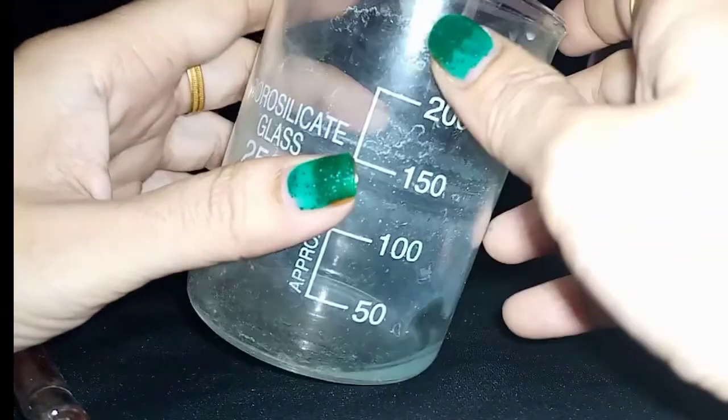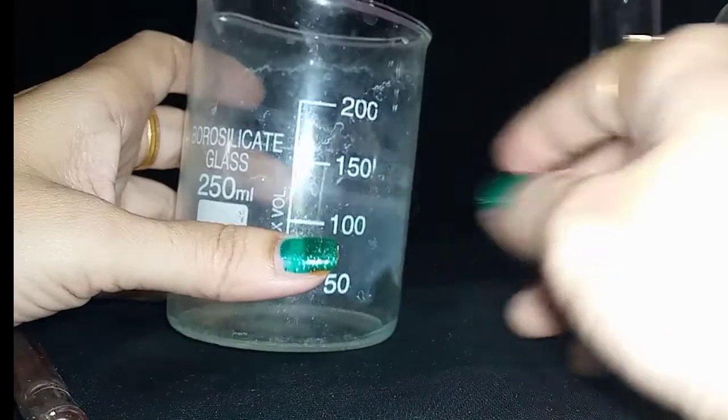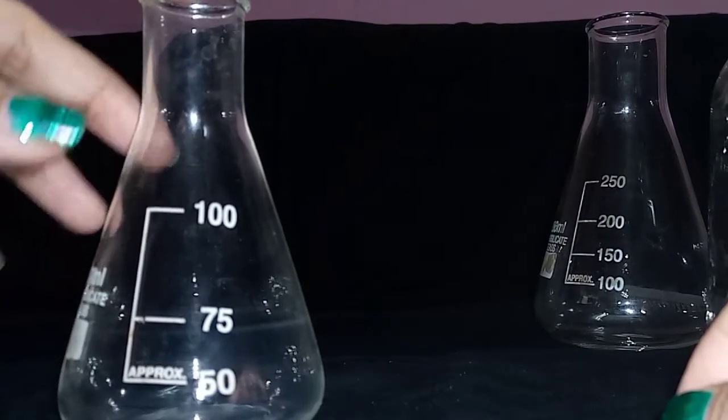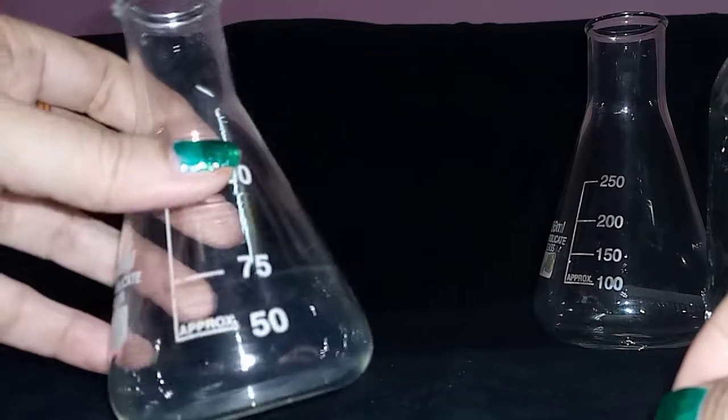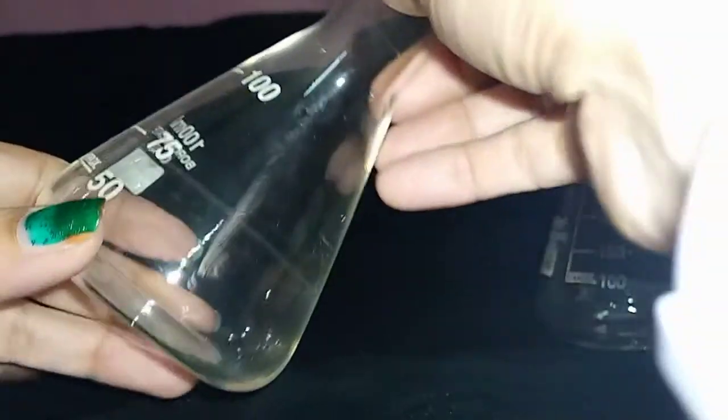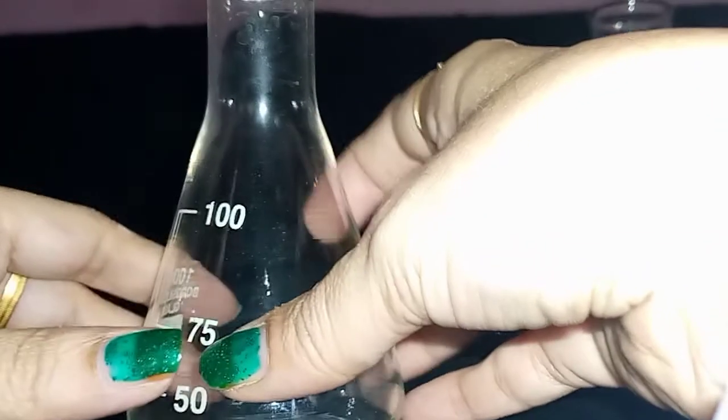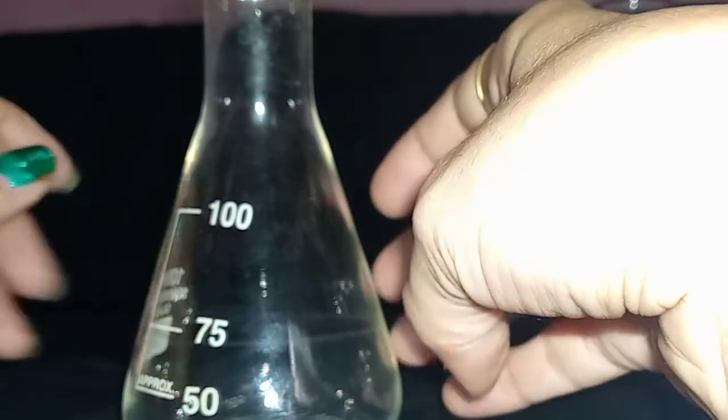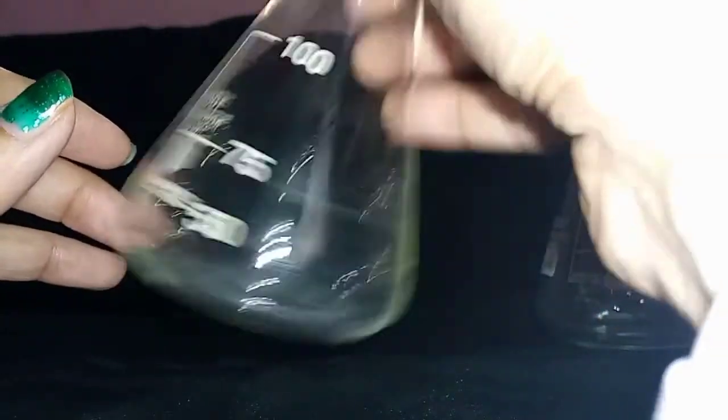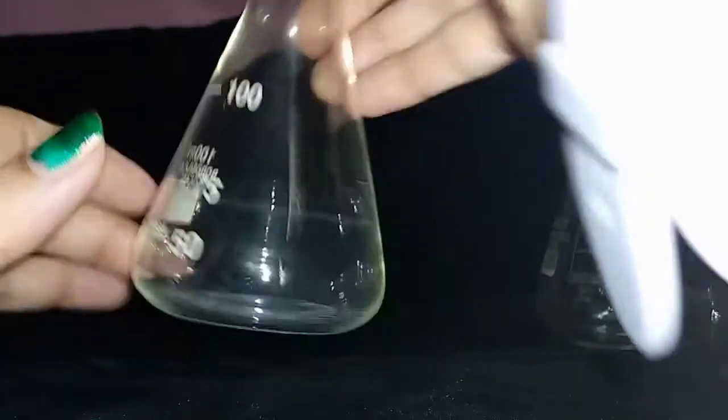Now here, this one is called a conical flask, also called an Erlenmeyer flask. Conical flasks are used in titrations for carrying out reactions. Due to their conical shape, these flasks are efficient in containing splashing of chemicals while we are swirling.